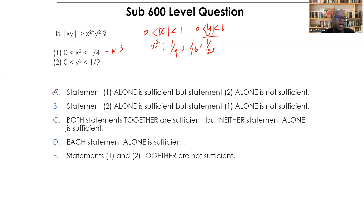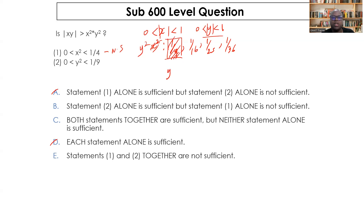So we rule out answer choices A and D. Now the second statement: zero is less than y² which is less than one-ninth. That means y² takes values like one-sixteenth, one-twenty-fifth, one-thirty-sixth, etc. Taking square roots, the absolute value of y is less than one-third — which satisfies our required condition for y. However, statement two tells us nothing about x, so we cannot determine sufficiency from statement two alone.